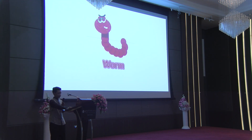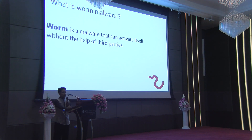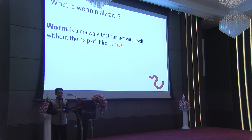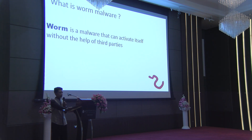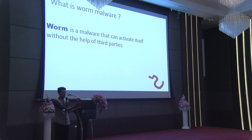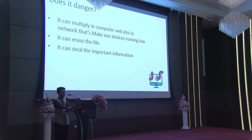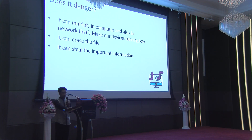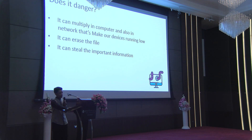Next is a worm. A worm is malware that can activate itself without the help of a third party — similar to a virus. If a worm has succeeded in entering a computer or network, it can move to other computers automatically without being prevented by other computer owners. Worms cause networks and computers to run slowly, and worms can also delete personal or company data.